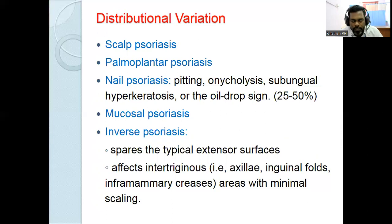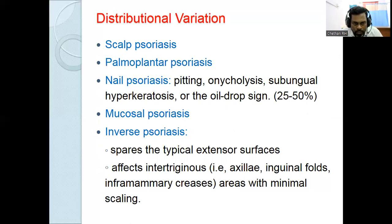The differential diagnosis of scalp psoriasis is seborrheic dermatitis, which has oily, greasy, yellowish thick scales and can be associated with other seborrheic areas: scalp, external auditory canal, glabella, medial eyebrows, nasolabial fold, retroauricular fold, submental region, chest, back, and lumbosacral region.